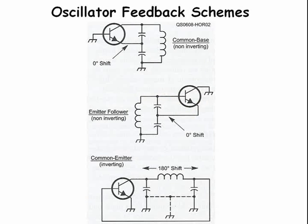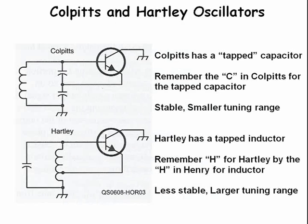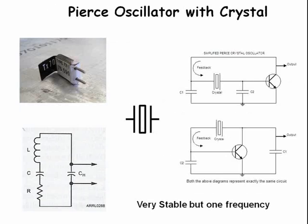Three common oscillator circuits are the common base, the emitter follower, and the common emitter. The two most famous are the Colpitts and Hartley. The Colpitts circuit is more stable but has a smaller tuning range — remember the letter C for tapped capacitor. The Hartley is less stable but has a larger tuning range and uses a tapped inductor. The Pierce oscillator uses a crystal and is very stable but only operates on one frequency.